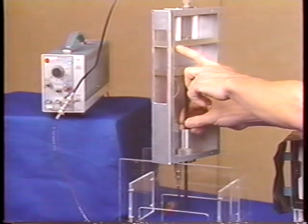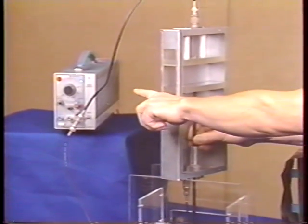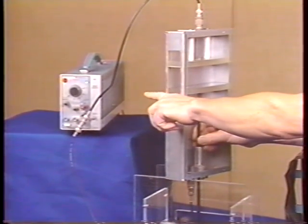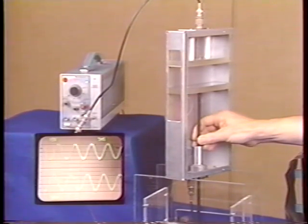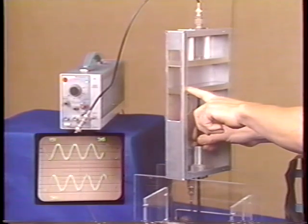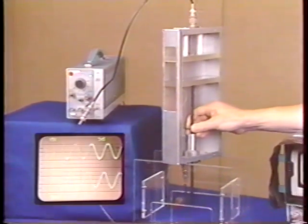Here's the top electrode. Its potential is determined by the oscillator. That's the top trace of the scope pattern. Here's the bottom electrode. Its potential is measured by the bottom trace on the scope.